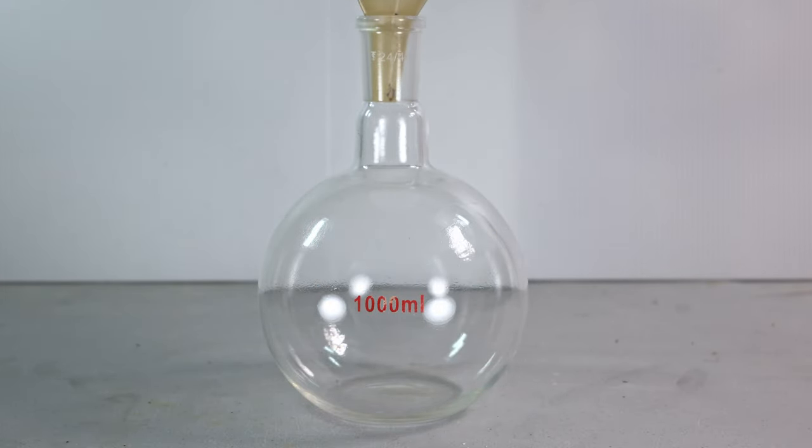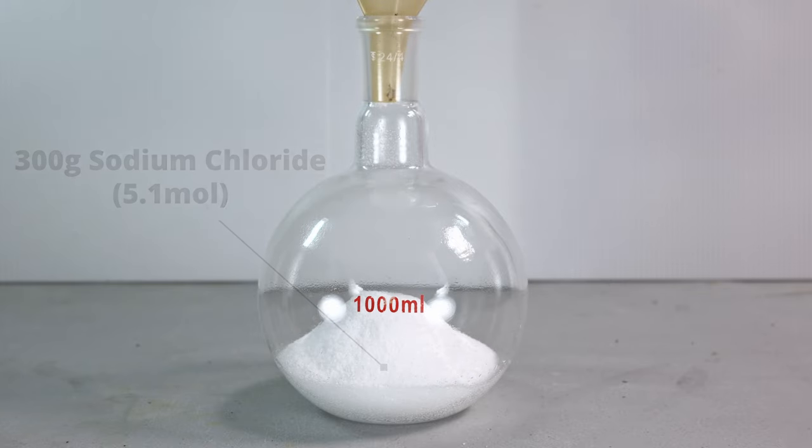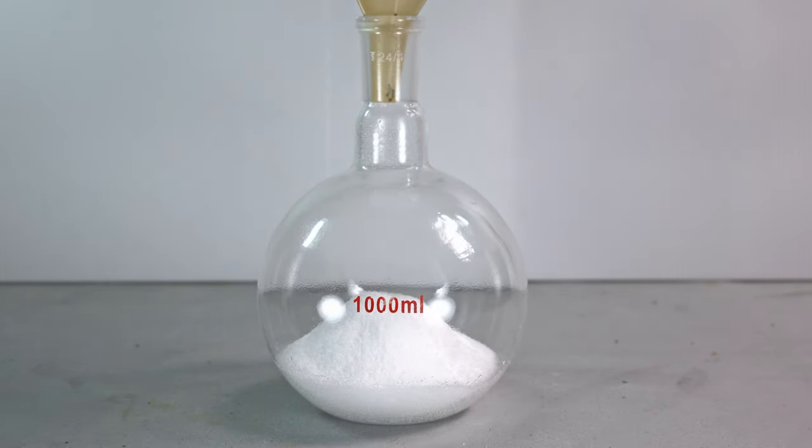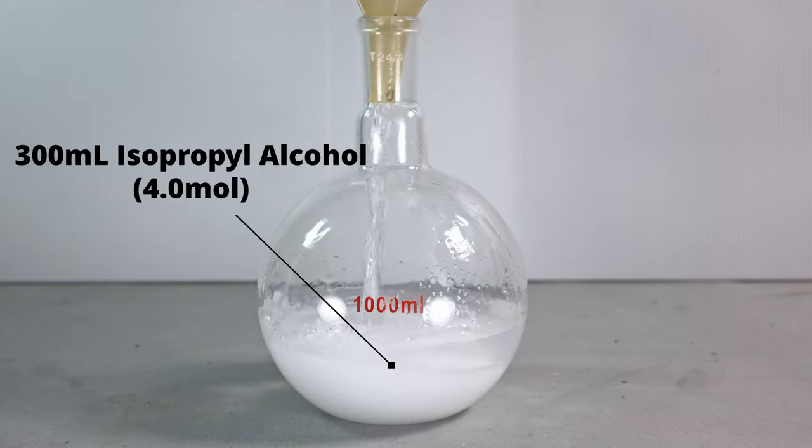The first thing we're going to do is add in 300 grams of sodium chloride salt. This is a little more than 5 moles of sodium chloride. Now I'm going to pour in 300 milliliters of 91% isopropyl alcohol. This equates to roughly 4 moles of alcohol.